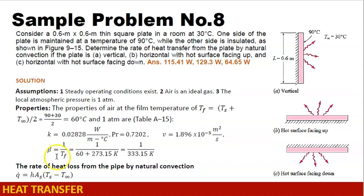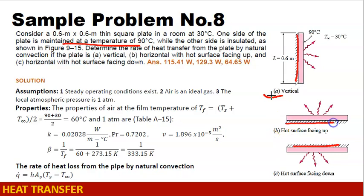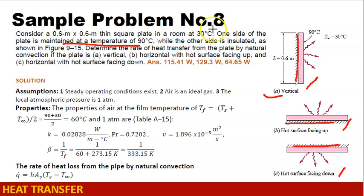Sample problem number 8: natural convection. For this, we are given 3 scenarios. A square plate whose one side is maintained at a temperature of 90 degrees Celsius while the other side is perfectly insulated. The temperature of the fluid surrounding this plate is 30 degrees Celsius. We consider a 0.6 by 0.6 meter thin plate when the plate is vertical, when the hot surface is facing up, and when the hot surface is facing down.